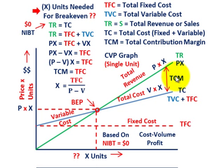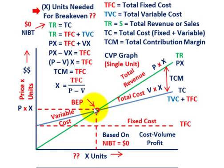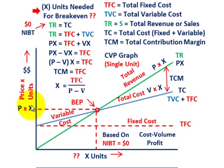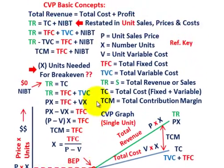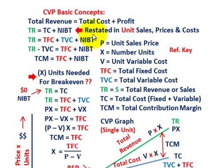The total contribution margin is the difference between total revenues and total variable cost. The break-even point is where total revenues intersects with total costs — total revenues being price per unit times units sold. We're going to be solving for X, the number of units. Let's now look at the simple equation.